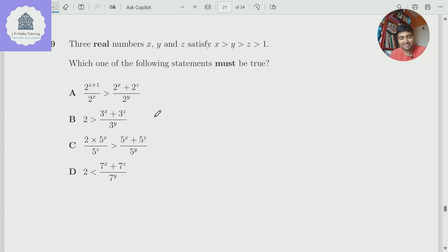The real numbers x, y, and z satisfy x is bigger than y is bigger than z is bigger than 1. Which one of the following statements must be true? And we've got four different options here, all to do with either 2, 3, 5, or 7, and raising them to powers of x, y, z, and looking at inequality.